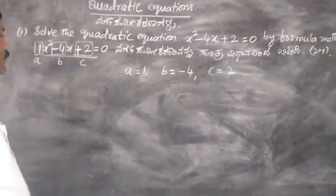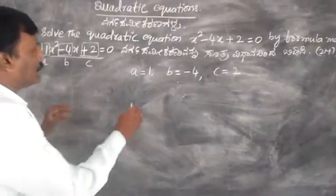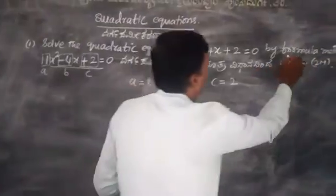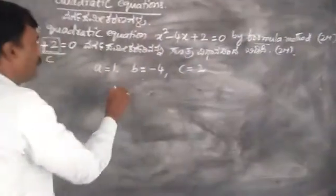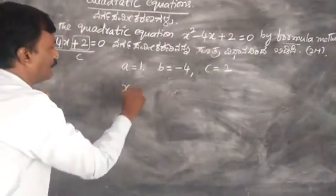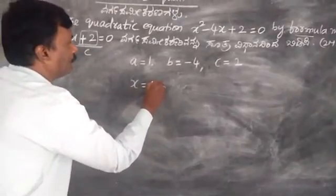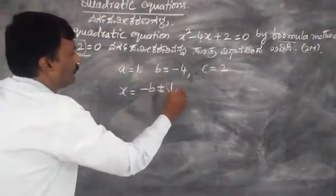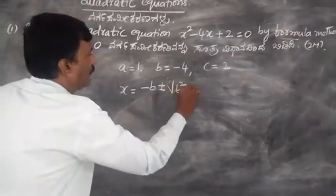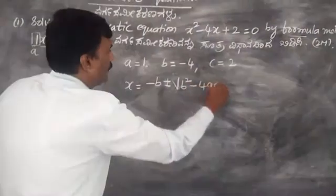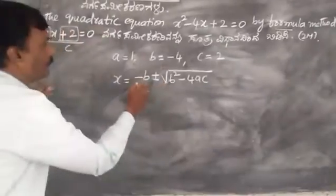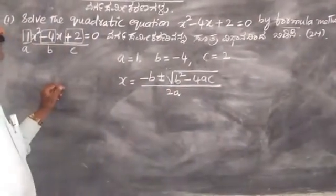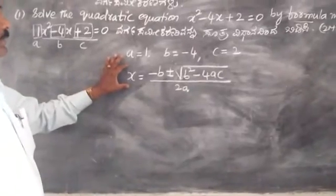The quadratic formula is: x equals minus b plus or minus the square root of b squared minus 4ac, all divided by 2a.